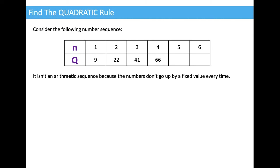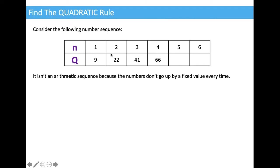It isn't an arithmetic sequence because the numbers don't go up by a fixed value every time. To get from 9 to 22 you have to add 13, to get from 22 to 41 you have to add 19, and to get from 41 to 66 you have to add 25. Another way to look at that is just to subtract them: 22 minus 9 isn't the same as 41 minus 22, which isn't the same as 66 minus 41.